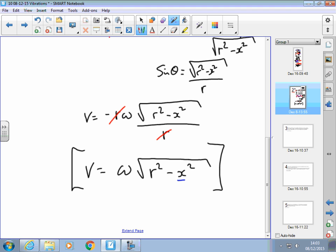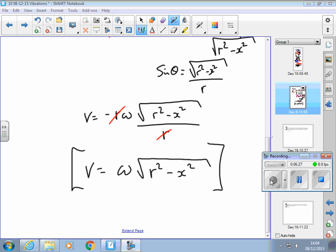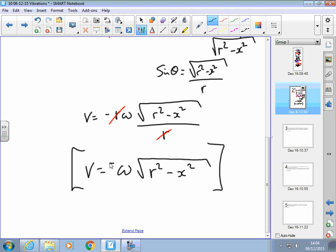So if I know x, and I know r, and I know omega, I can find the velocity of this thing at any instant. A useful formula. Ah, negative in there.